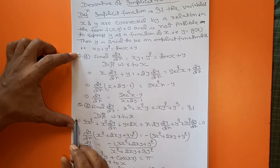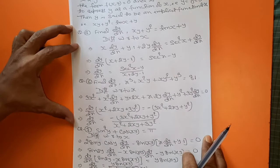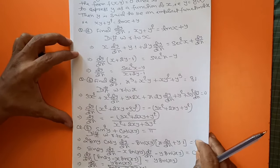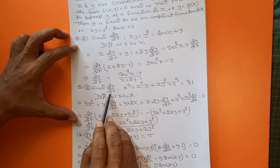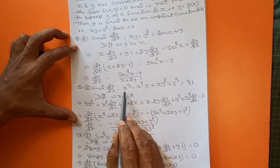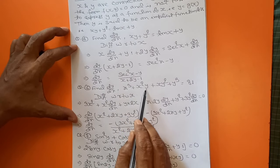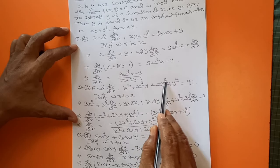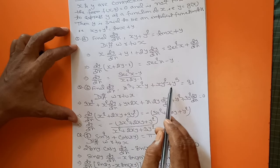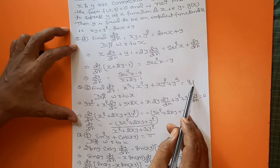Now question number 6: find dy/dx, where the equation is x³ + x²y + xy² + y³ = 81.